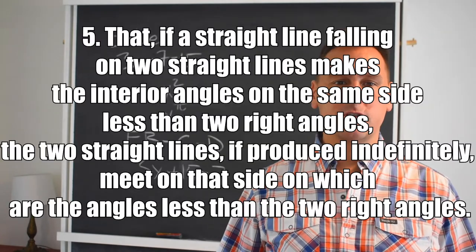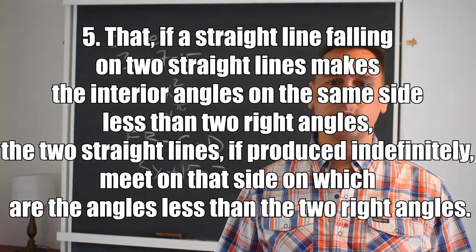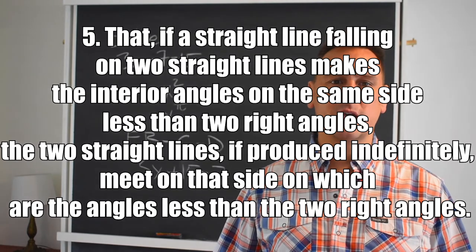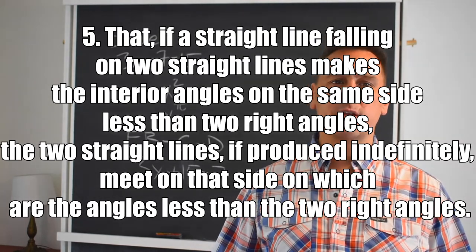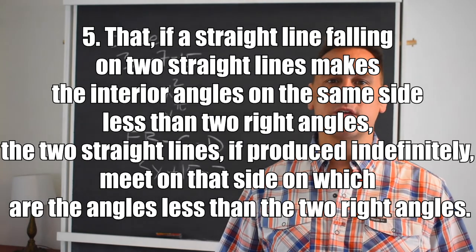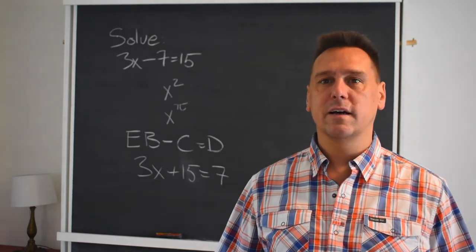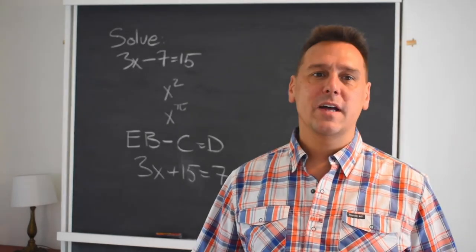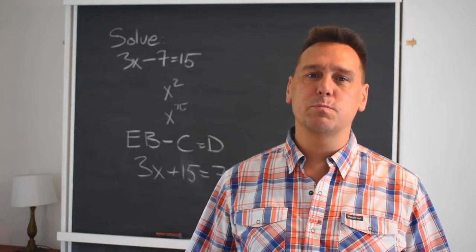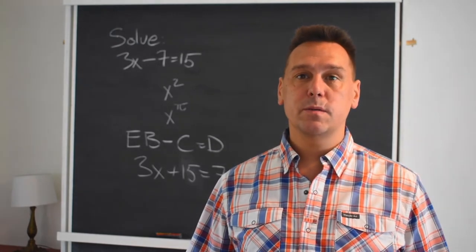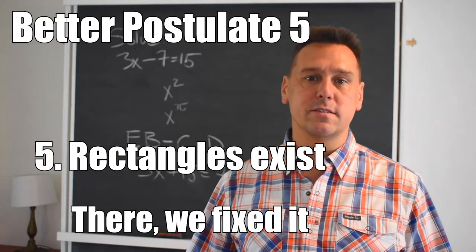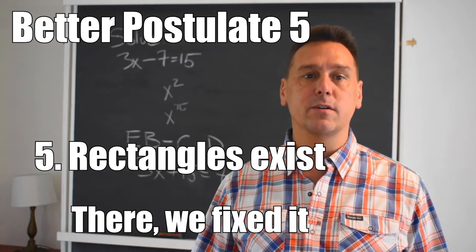Well, this all goes a little bit sideways when you get to number 5. Postulate 5: That if a straight line falling on two straight lines makes the interior angles on the same side less than two right angles, the two straight lines, if produced indefinitely, meet on that side which are the angles less than the two right angles. Okay. That's just maybe one of the ways that this book could have been a little bit better. In its place logically, we could simply write down, rectangles exist, and we would get the same mathematical system.